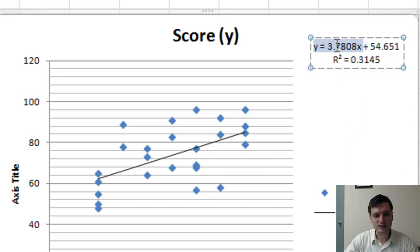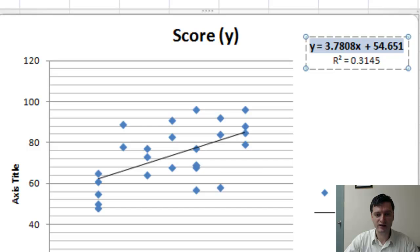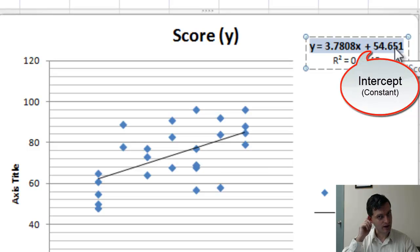The first thing we see here is the regression equation. And that is y equals 3.7808 times x plus 54.651. Now, 54.651 is A, or the intercept.